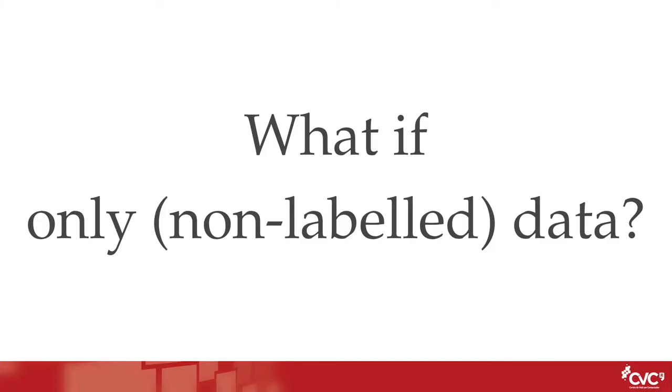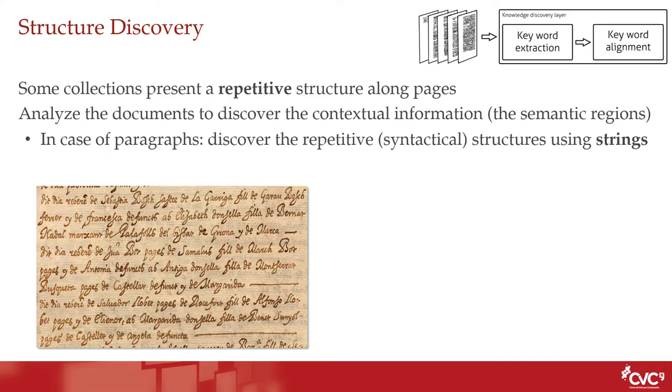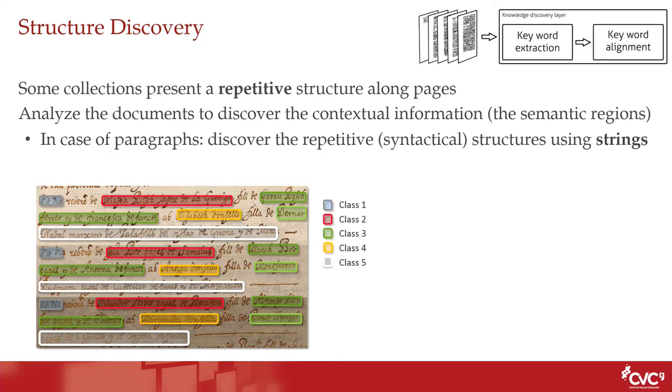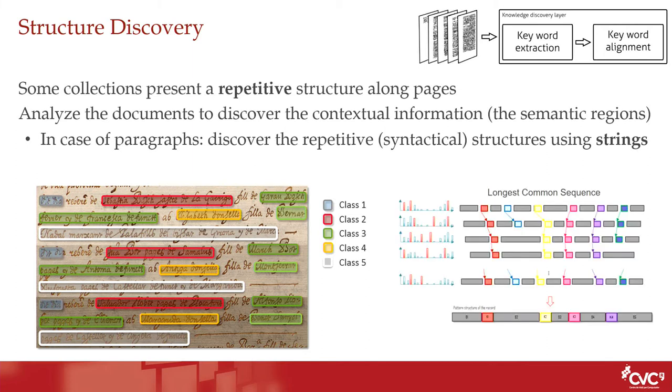What if I have data but no labels at all? Can I extract information from big collections in a completely unsupervised way? Here we have an example of handwritten documents with no training data. Can I discover at least the semantic structure behind them? Yes. I could analyze from left to right, see the different paragraphs, and notice there are repetitive words that probably separate different semantic parts of the document. I just need to put all the paragraphs into one single line and find which repetitions are always present in each of them. This is called string alignment.